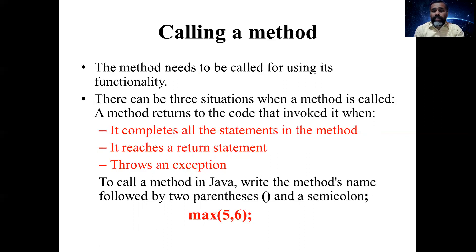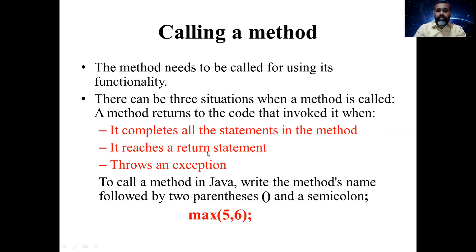There are three situations when a method is called and returns to the code that invoked it: first, when it completes all the statements in the method; second, when the return keyword is reached and the value is returned to the call point; and third, if an exception occurs and is thrown. These are the three situations that end a method call.